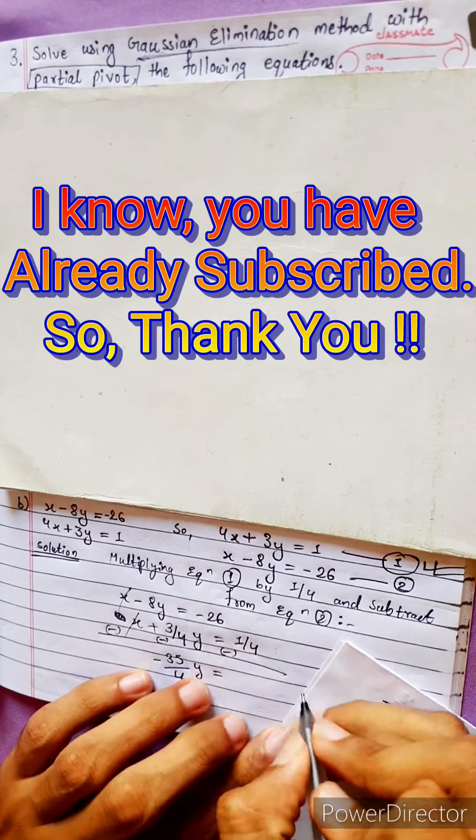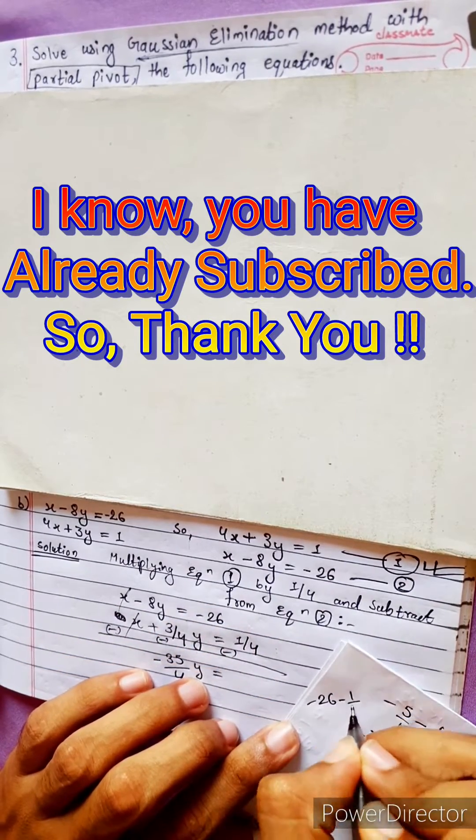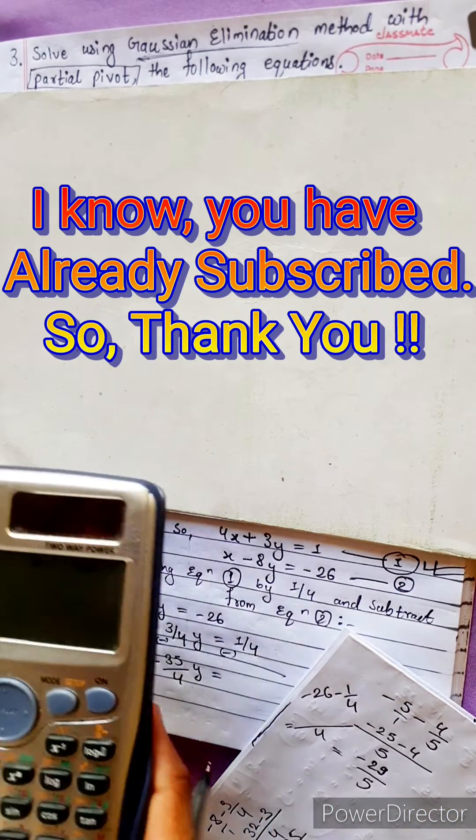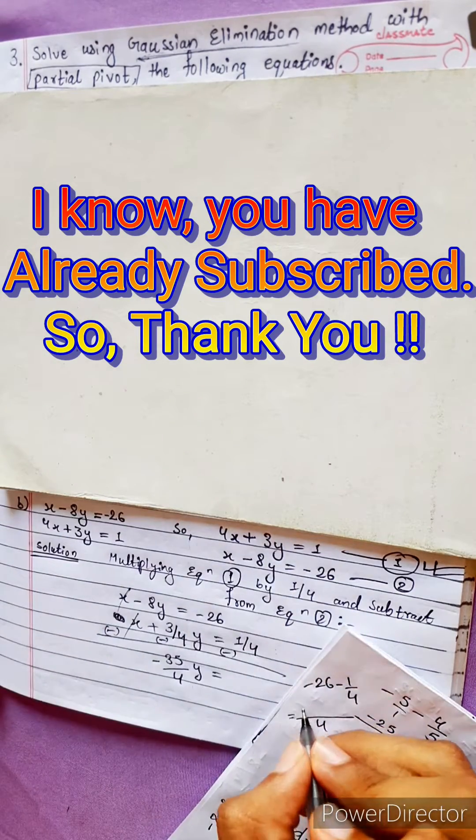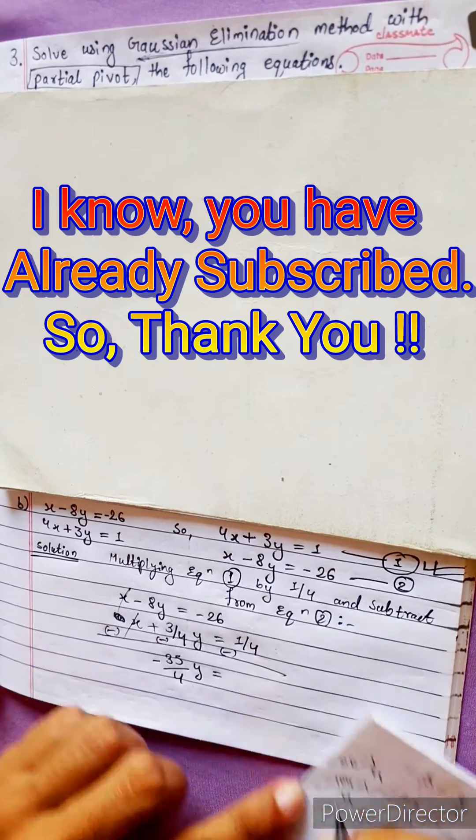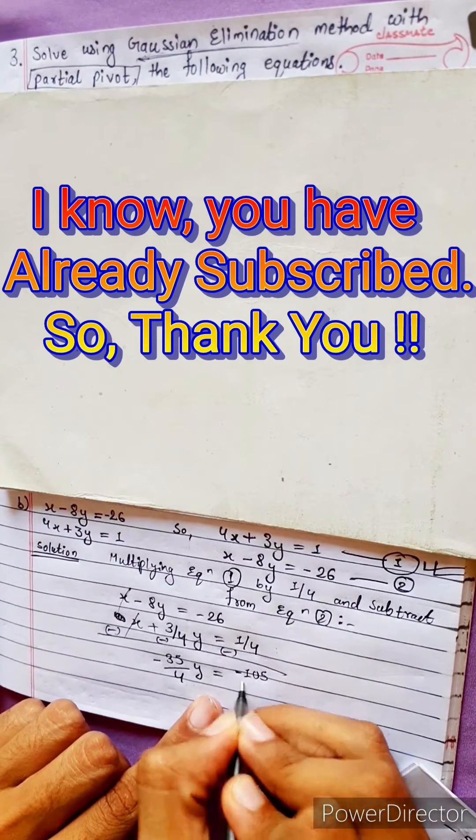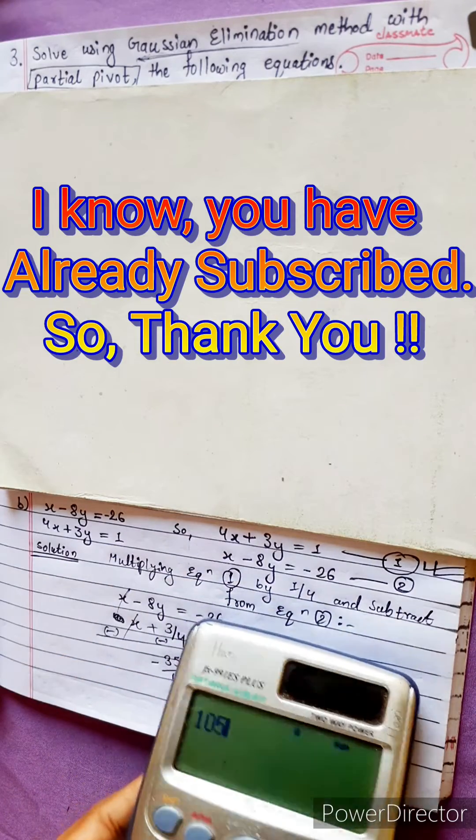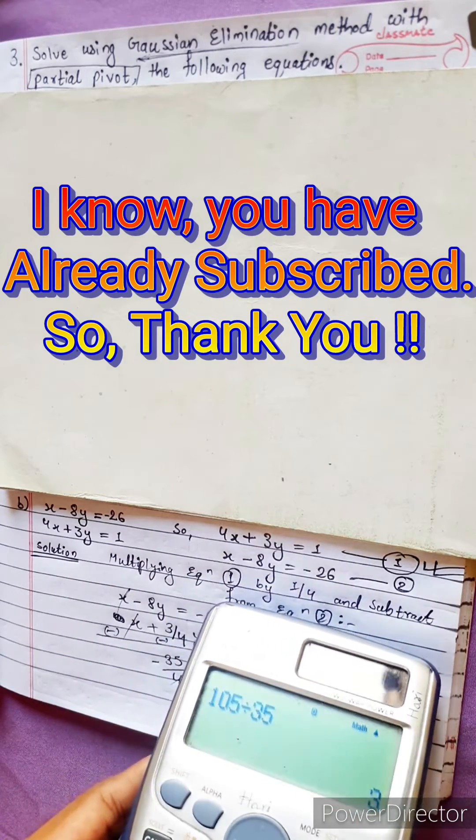Again, this is minus 26 minus 1 by 4. LCM. 26 into 4 is 104. Minus 104 minus 1. This is minus 105 divided by 4. Four cancel. 105 divided by 35 is 3.